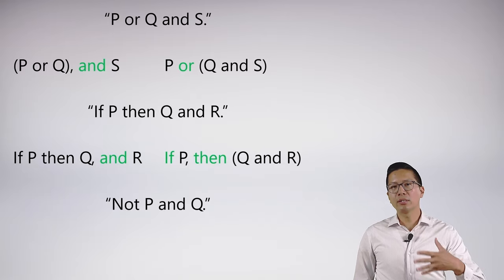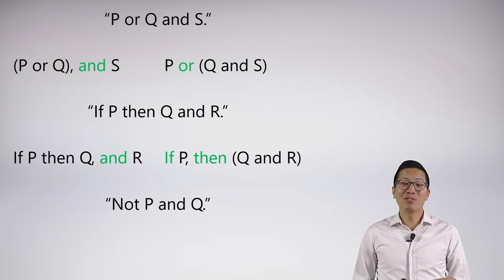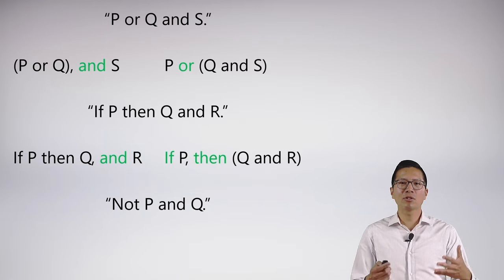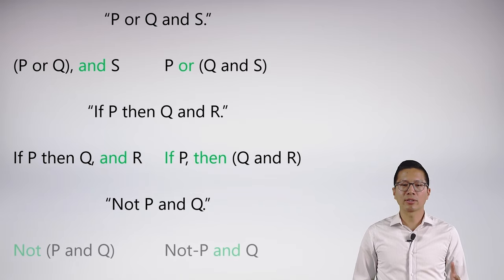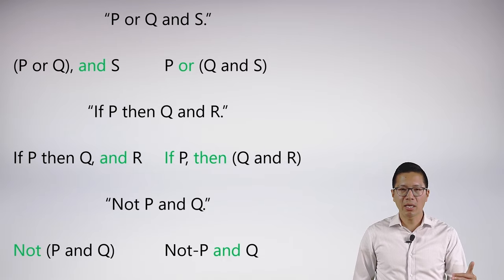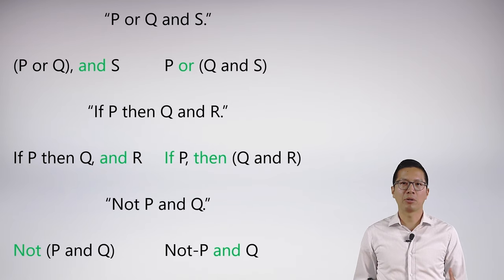Notice in all these cases that I'm disambiguating these statements, I've used commas — I've inserted some punctuation to help me out. But sometimes English doesn't really allow for punctuation to help things out. Here's an example. If I say 'not P and Q,' am I saying 'not P, and Q'? Or am I saying 'not (P and Q)'? And there's no real comma that can help me out here.